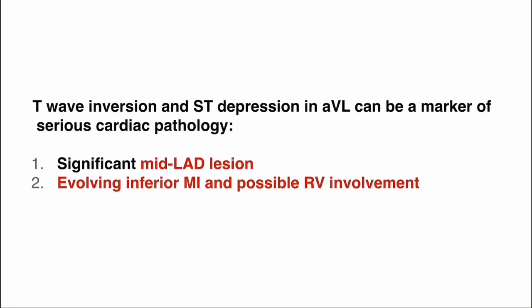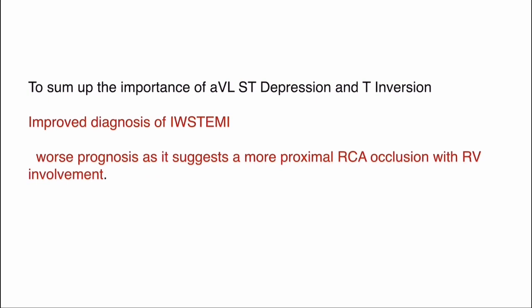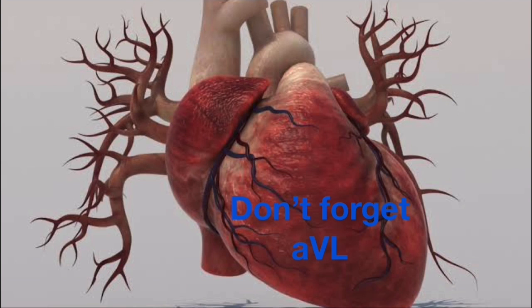Always take a repeat ECG once you see this pattern. The importance of this finding is that it improves diagnosis of inferior wall STEMI. The presence of isolated ST depression in aVL indicates worse prognosis in inferior wall STEMI because it suggests a more proximal RCA occlusion with right ventricular involvement. The only change may be an isolated ST depression or T-wave inversion in aVL that may later evolve into inferior wall STEMI — so don't forget lead aVL.